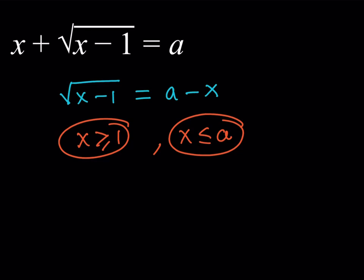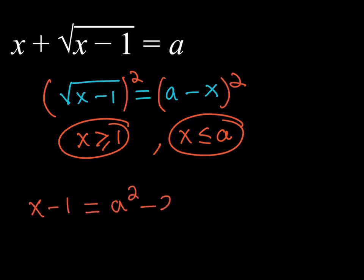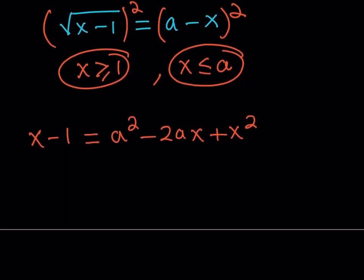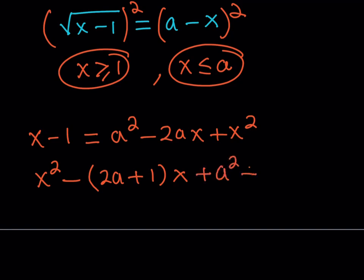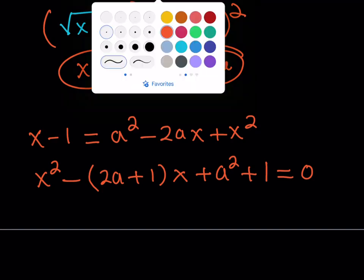Having said this, I'm going to square both sides. After squaring, the left side gives x minus 1 and the right side gives a squared minus 2ax plus x squared. Let's turn this into a full quadratic equation: x squared minus the quantity (2a plus 1) times x plus (a squared plus 1) equals 0. This is a quadratic we can solve with the quadratic formula.